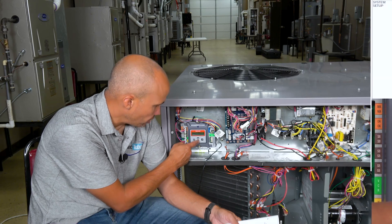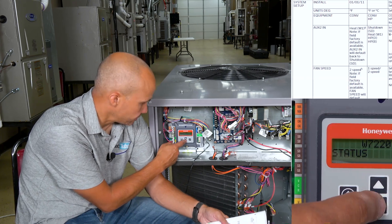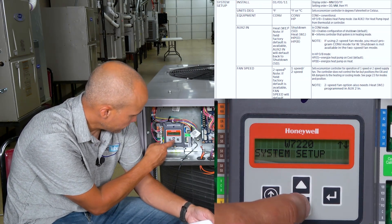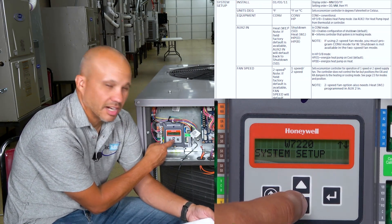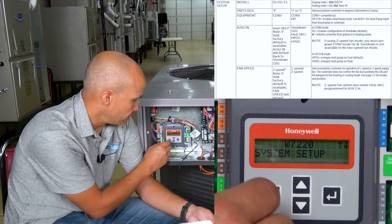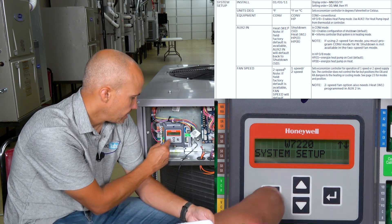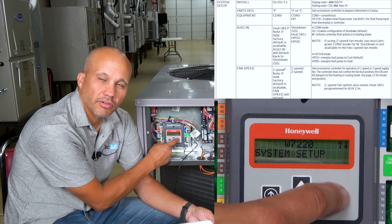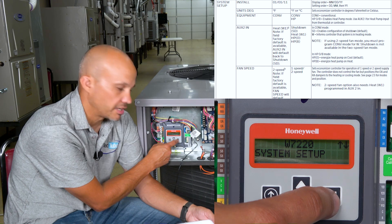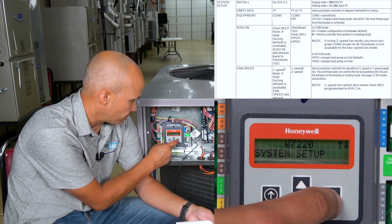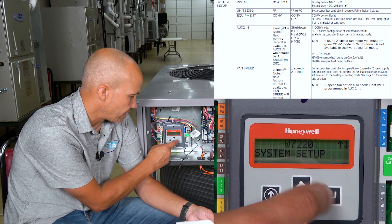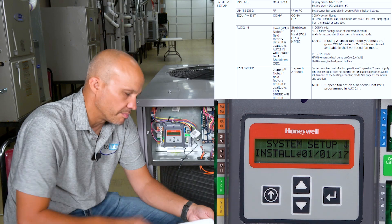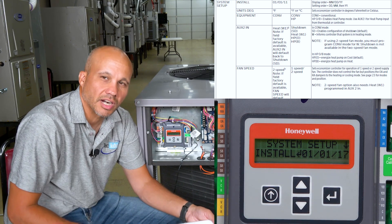To get to the setup, scroll down through Status, Set Points, System Setup — that's where we're going to start on a new install. The key on the left is an Escape key, the key on the right is an Enter key, and the up and down arrows scroll you through. Now that I'm on System Setup, I'll press the Enter key and I'm into the system setup.